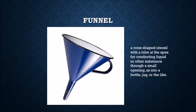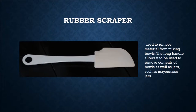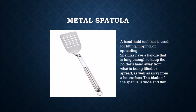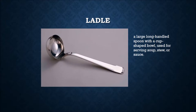A funnel is a cone-shaped utensil with a tube at the apex for conducting liquid or other substances through a small opening, such as into a bottle or jug. A rubber scraper is used to remove material from mixing bowls; the long handle allows it to remove contents from bowls as well as jars such as mayonnaise jars. A metal spatula is a handheld tool used for lifting, flipping, or spreading, with a blade that is wide and thin and a handle long enough to keep the holder's hand away from hot surfaces. A ladle is a large, long-handled spoon with a cup-shaped bowl, used for serving soup, stew, or sauce.